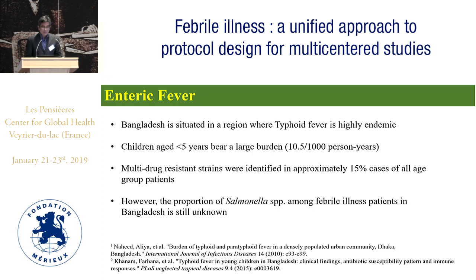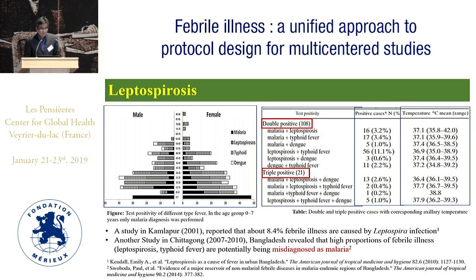Enteric fever: Bangladesh is highly endemic for typhoid fever. Under-five children are the most burdened, at 10.5 percent per 100,000 persons per year. In 15 percent of all cases, multidrug-resistant Salmonella species have been identified. However, the proportion of Salmonella species among febrile illness patients in Bangladesh is still unknown. A study in Kamla reported that 8 percent of all febrile illness cases were caused by leptospirosis infection. Another study conducted between 2007 and 2010 in Chittagong revealed that high proportions of febrile illnesses — especially leptospirosis and typhoid fever — are potentially being misdiagnosed as malaria, and many leptospirosis infections were detected with one or more other pathogens.